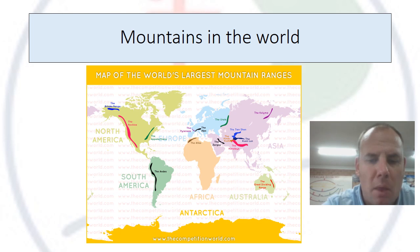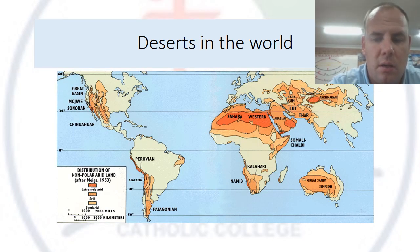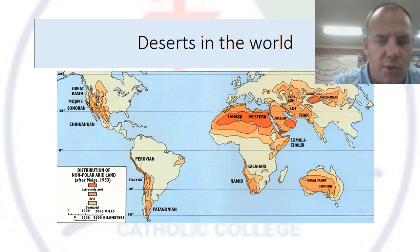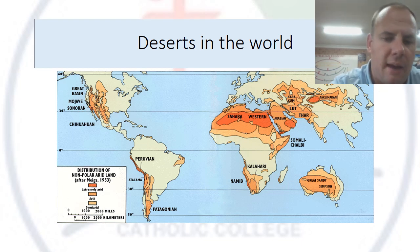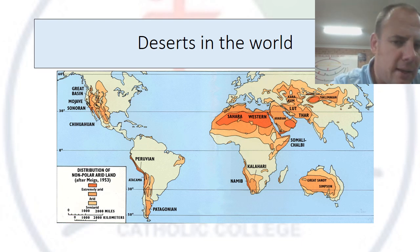Now look at where the mountain ranges are in comparison to the next map, which shows all the deserts. You can see mountain ranges, then desert. In Australia, the Great Dividing Range is to the west of the deserts. The same pattern appears in Africa and South America. Let's put the two maps together to make it clearer.